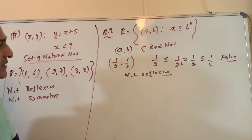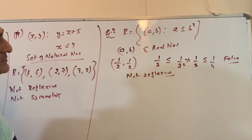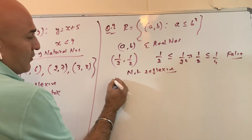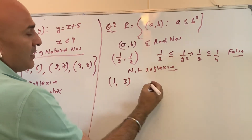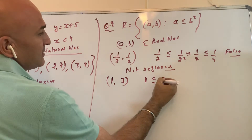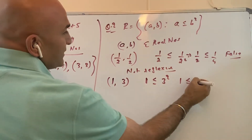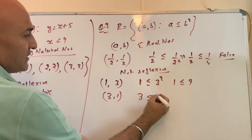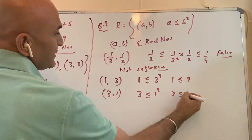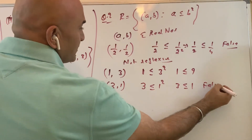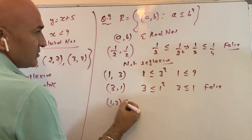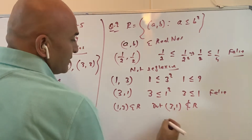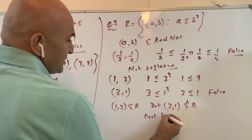Now take another example for symmetric. Take (1, 3): 1 is less than 3 squared, so 1 is less than 9 — true. But if you put (3, 1): 3 is less than 1 squared gives 3 less than 1, which is false. So (1,3) belongs to R but (3,1) does not belong to R. So it is not symmetric.